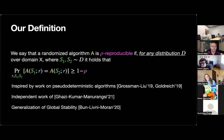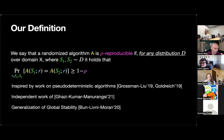This definition can be seen as a generalization of the global stability property introduced by Mark, Roy, and Shai in work characterizing what's learnable with approximate differential privacy. These are all the related works we're currently aware of that use a definition similar to ours.